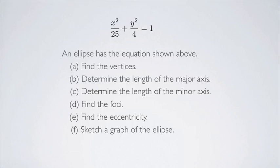The equation x² / 25 + y² / 4 = 1 describes an ellipse. We're going to find the vertices, determine the length of the major axis, determine the length of the minor axis, find the foci, find the eccentricity, and then sketch a graph of the ellipse.